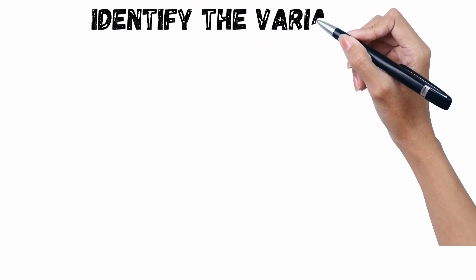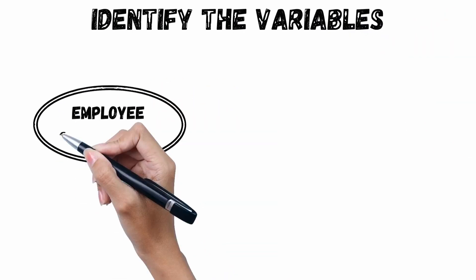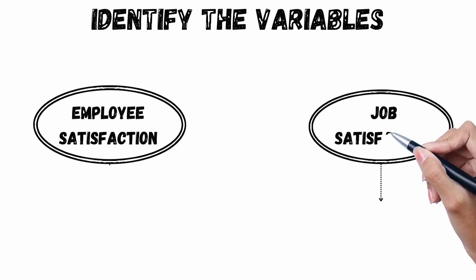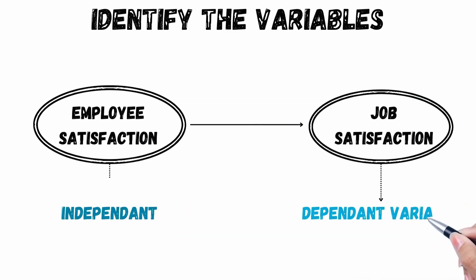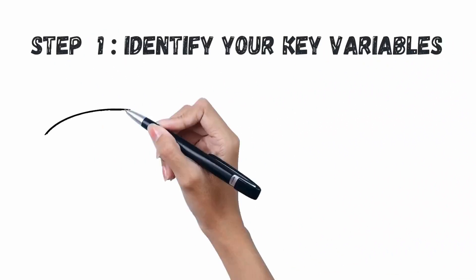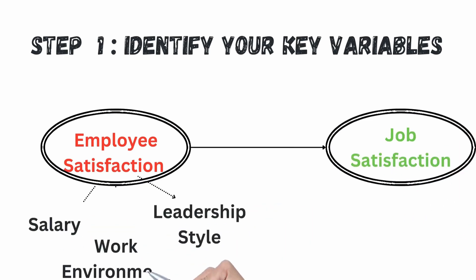For example, if we take employee motivation and how it affects job satisfaction — employee motivation is your independent variable while job satisfaction is your dependent variable. Under employee motivation, you can have additional sub-variables such as salary, work environment, and leadership style.